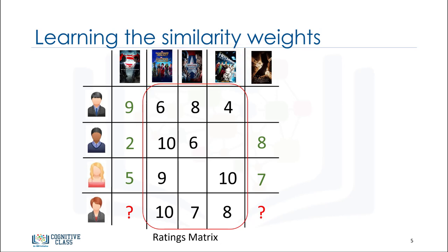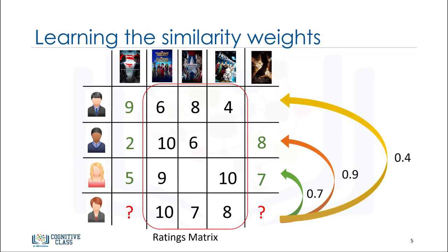Regardless of what we use for similarity measurement, for example, the similarity could be 0.7, 0.9, and 0.4 between the active user and other users. These numbers represent similarity weights, or proximity, of the active user to other users in the dataset.